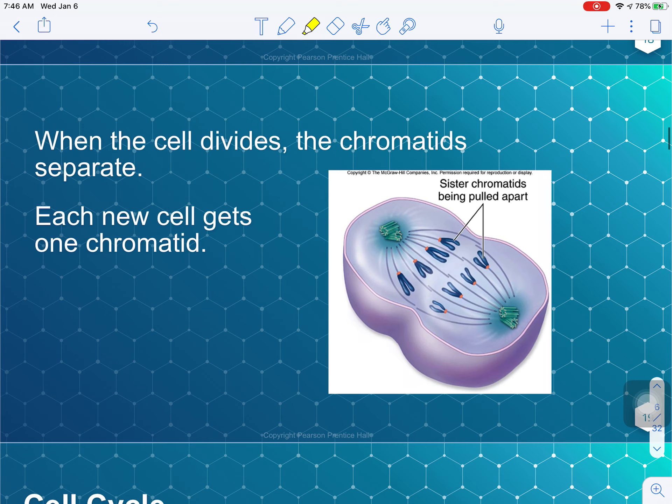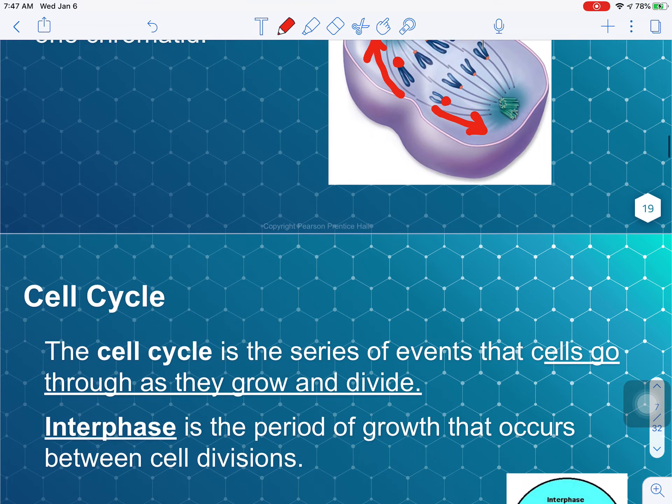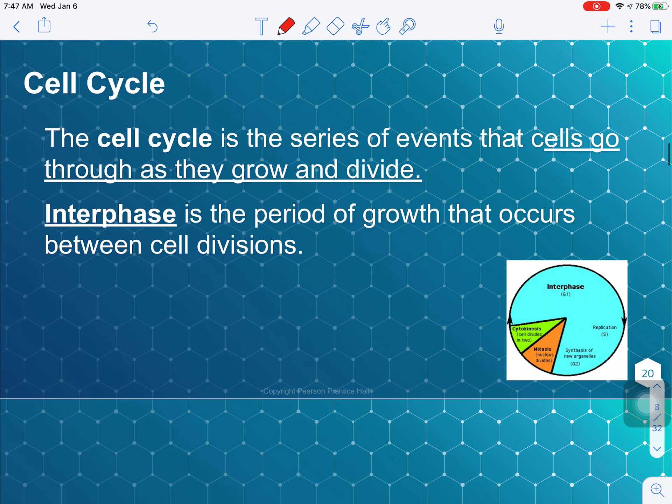Okay, so when the cell divides, each of those sister chromatids is going to separate and form a new chromatid. So during cell division, this is why I said it's important that each one has the exact same genetic information is because each sister chromatid gets pulled apart at its centromere right here and right here. They get pulled apart into opposite sides of the cell. And one new chromatid is going to go for each new cell, giving it a complete set of DNA. We'll get into more details on that later.